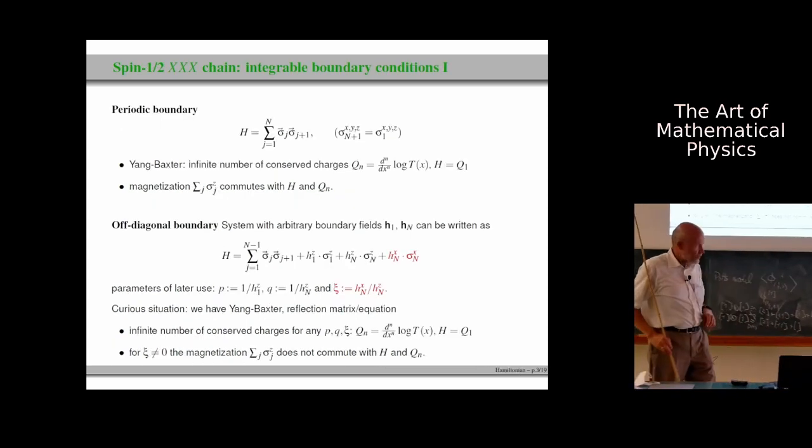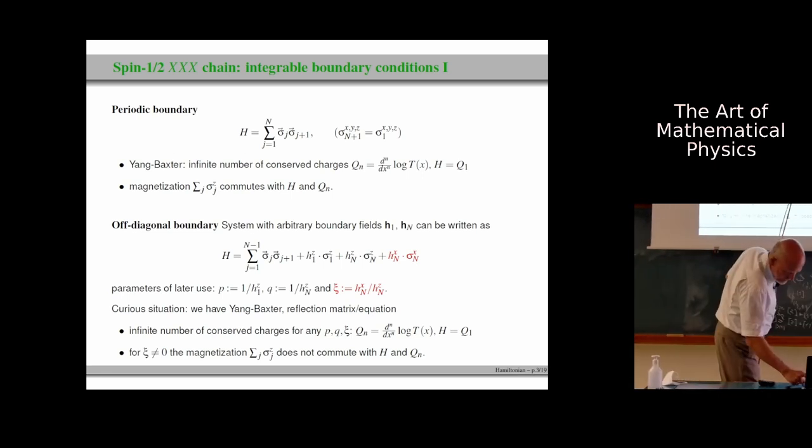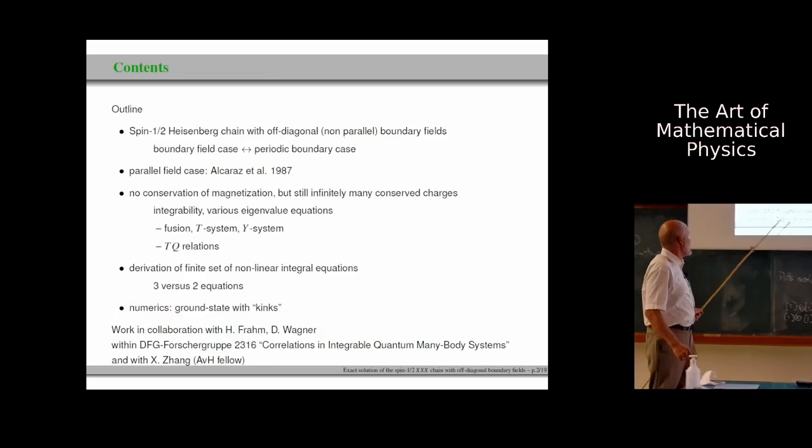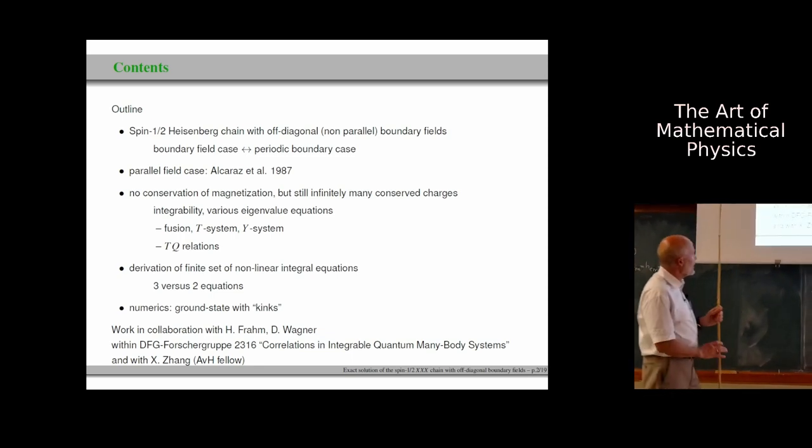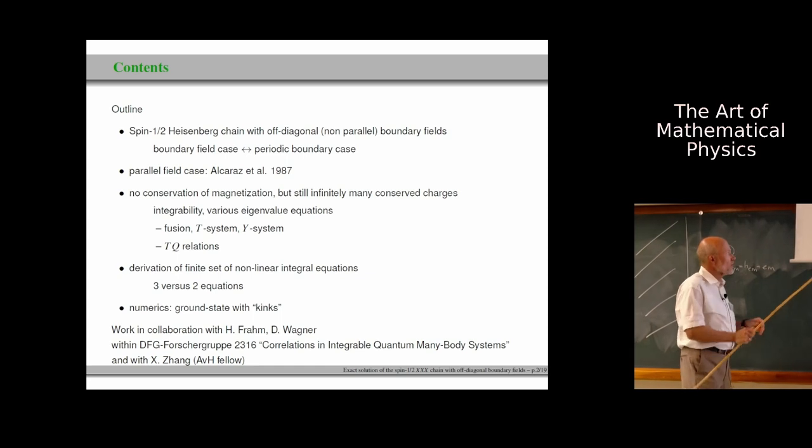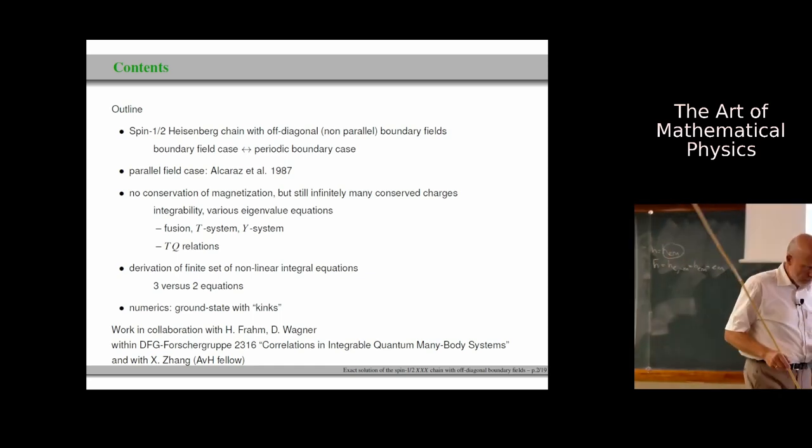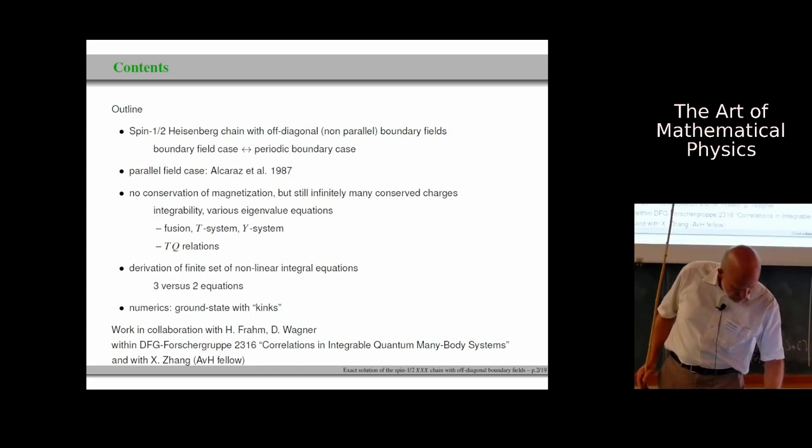The solutions to these nonlinear integral equations show some interesting but still rather boring behavior. But numerically, it's rather difficult to solve these nonlinear integral equations. Usually we do it like in TBA by starting with some initial data and then we iterate these integral equations and we have convergence. This is a little bit difficult. The present case, the collaborators are Holger Fram, Dennis Wagner, and recently Xin Zhang, who was an Alexander von Humboldt fellow and only recently went back to China.